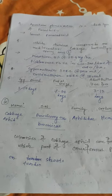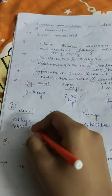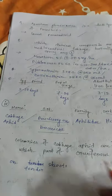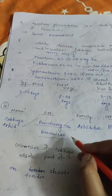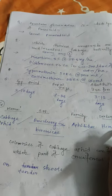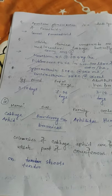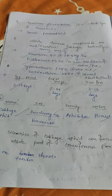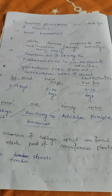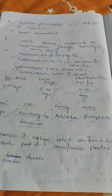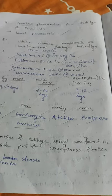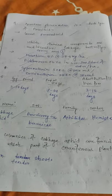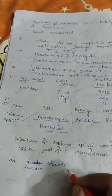The fourth insect pest for cruciferous crops is the Cabbage Aphid. Scientific name is Brevicoryne brassicae, family Aphididae, order Hemiptera. Colonies of cabbage aphid are found on tender shoots.